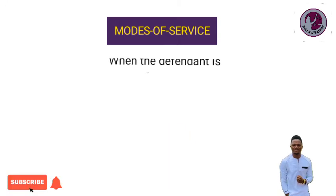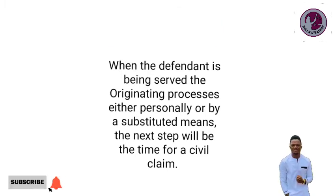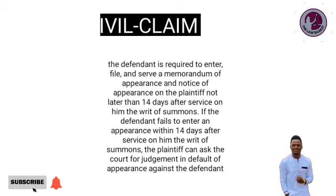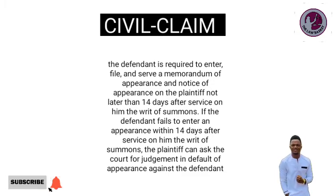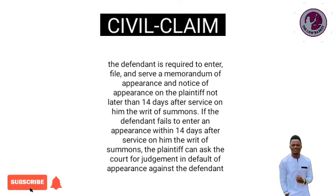When the defendant has been served the originating process — either personally or by substituted means — the next step is the time for a civil claim. The defendant is required to enter, file, and serve a memorandum of appearance and notice of appearance on the plaintiff not later than 14 days after service of the writ of summons. If the defendant fails to enter an appearance within 14 days, the plaintiff can ask the court for judgment in default of appearance.